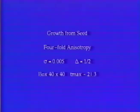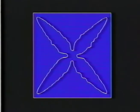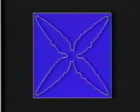With fourfold anisotropic surface energy, large arms emerge in the preferred directions whose tips move at constant velocity. For this relatively large magnitude of surface energy, no side branches are produced in this size box.